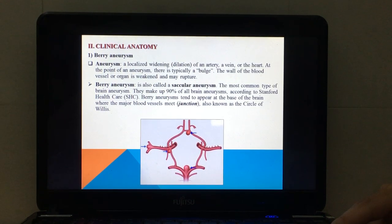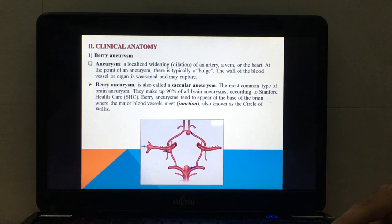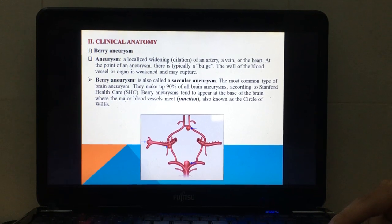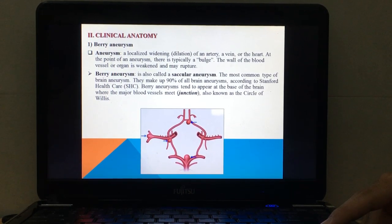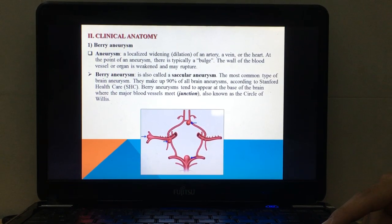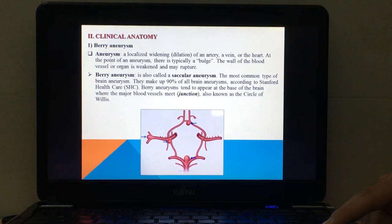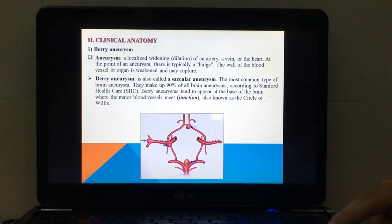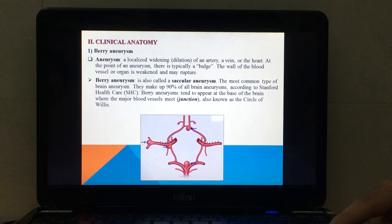At the point of an aneurysm, there is typically a bulge. The wall of the blood vessel or organ is weakened and may rupture. So what is a berry aneurysm? This one is also called a saccular aneurysm.